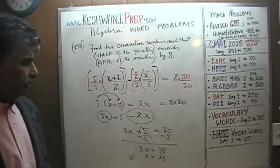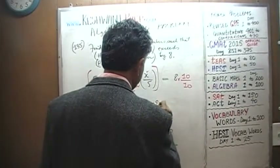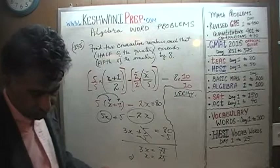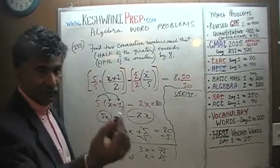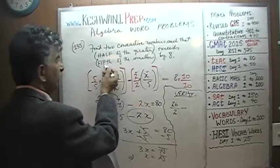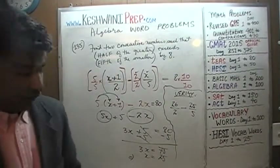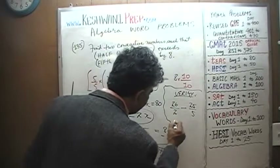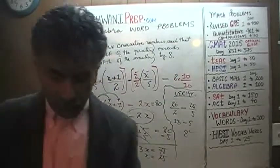At the very end, we're going to take a couple of quick seconds to verify our work. We are told half of the greater one. If x is the first number, then the one that comes after it — the greater one — is going to be twenty-six. Half of twenty-six minus the fifth of the smaller one, twenty-five: twenty-six divided by two is thirteen, twenty-five divided by five is five, and thirteen minus five is indeed eight. Our answer is correct.